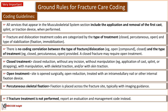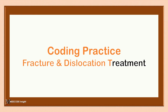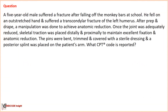Practice Question 1: A five-year-old male suffered a fracture after falling off the monkey bars at school. He fell on an outstretched hand and suffered a transcondyle fracture of the left humerus. After prep and drape, a manipulation was done to achieve anatomic reduction. Once the joint was adequately reduced, skeletal traction was placed distally and proximally to maintain excellent fixation and anatomic reduction. The pins were bent, trimmed, and covered with a sterile dressing, and a posterior splint was placed on the patient's arm.